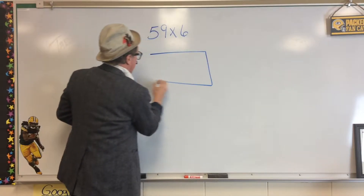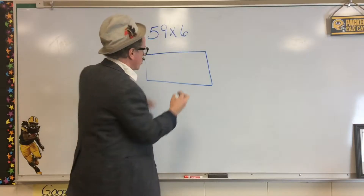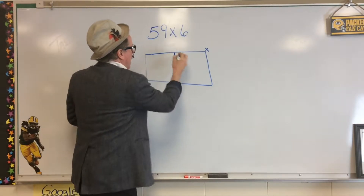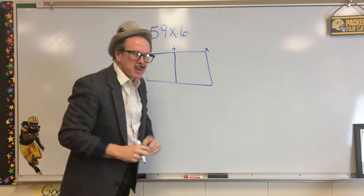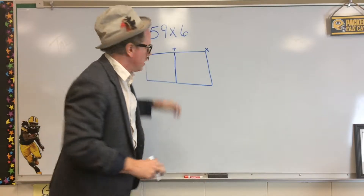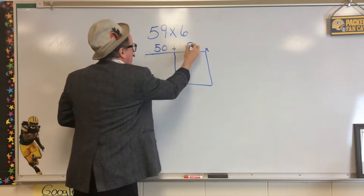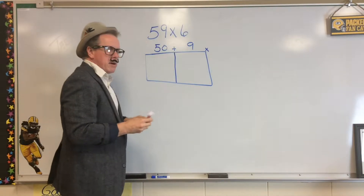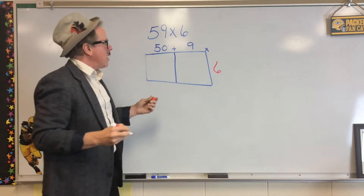I am going to make a box like this. I need to divide this into 2 because it's a 2 by 1. I'm going to put a plus sign there and a multiplication sign there. Now, 59 — I'm going to put that into expanded notation, which is going to be 50 and the 1-digit of 9. We're going to take our multiplier of 6 and put that right over there.